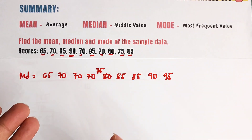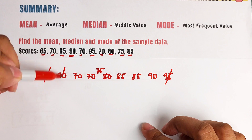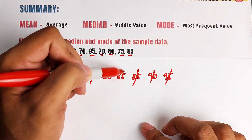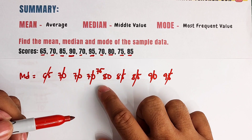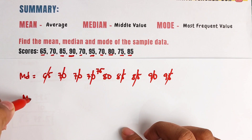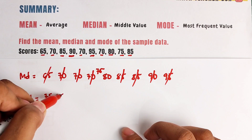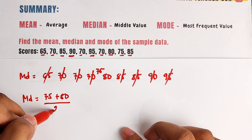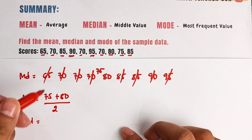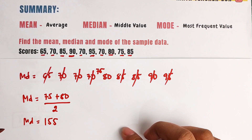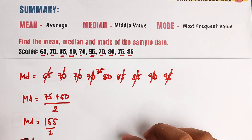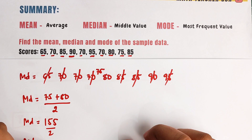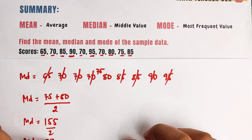This is an even number of values. So the median equals 75 plus 80 over 2, which is 155 divided by 2. 150 divided by 2 is 75, and 5 divided by 2 is 2.5, meaning the median of these numbers is 77.5.